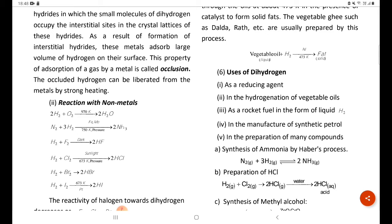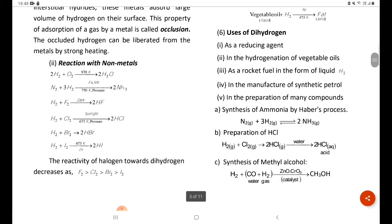H2 plus Br2 gives 2 HBr. H2 plus I2 gives 2 HI. The reactivity of halogen towards dihydrogen decreases as F2 greater than Cl2 greater than Br2 greater than I2.